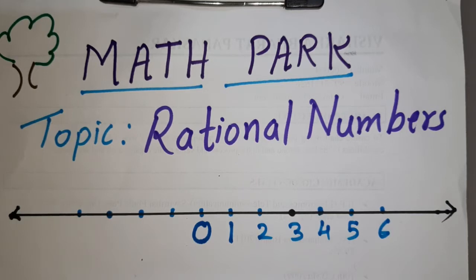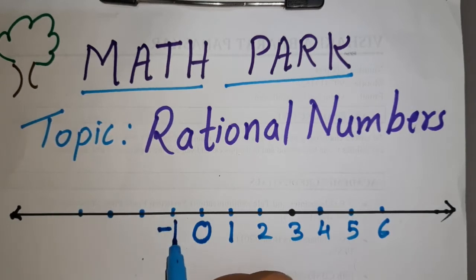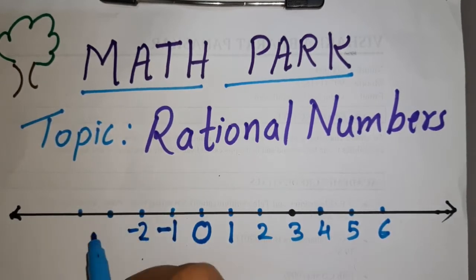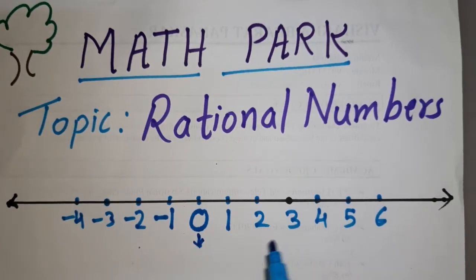What happens when we go in a lift? We go to the basement and see minus one, minus two. When we go to cold countries or cold regions, the temperature is in negatives — minus four, minus forty degrees Celsius. So all numbers less than zero are negative numbers, written as minus one, minus two, minus three, minus four and so on. All the whole numbers and their negatives are called integers. Zero is neither positive nor negative.